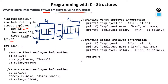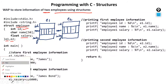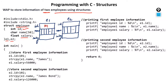Now store the information of the first employee. e1.id will have the value 101, so 101 will go into the id box. We use strcpy — this is the source and this is the destination — to copy 'James' into e1.name. So 'J-A-M-E-S' will come into the name box. Then e1.salary will become 56,000, so 56,000 will be the salary.